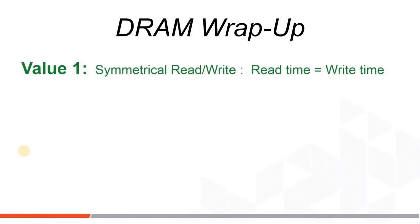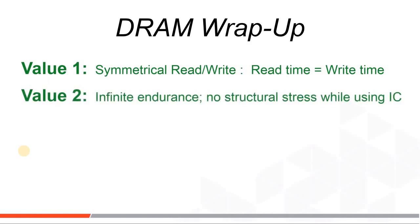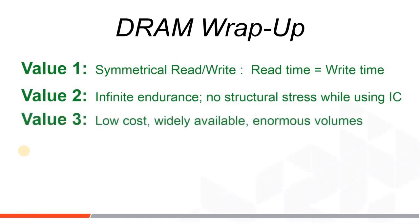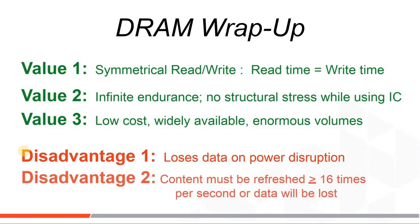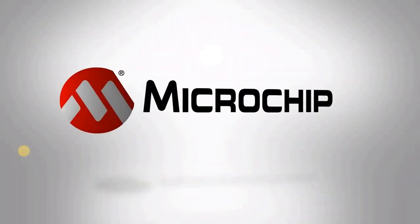DRAM wrap-up: Value 1 — DRAM is the lowest cost of the symmetrical read and write memories. Value 2 — DRAM is the lowest cost of infinite write memory accesses, meaning no structural damage to the part. Value 3 — because it's the lowest cost, DRAM is widely available in many formats, speeds, and packages. Disadvantages: it is volatile, so content will be lost on any power loss, and refresh cycles must be provided around 16 times each second to every memory cell.